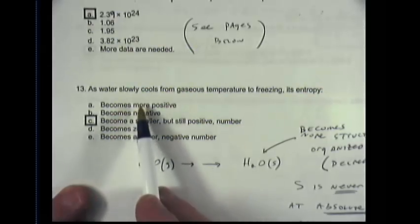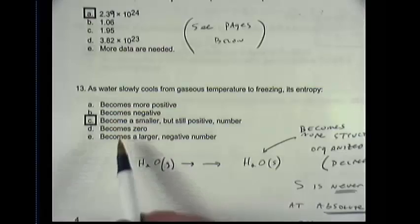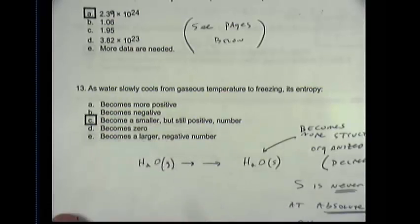So as we look through this, we can see any of the options that say entropy becomes smaller. Now here's the crux. If we look down here, we might think, well, it becomes negative. Is that possible? I don't know. What about this becomes a zero thing? Is that possible?